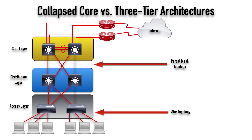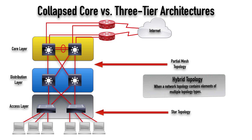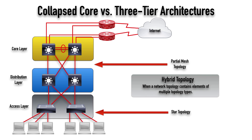This leads us to another term: a hybrid topology. A hybrid topology is a network topology that contains elements of multiple topology types. In this case, we've got an element of a star topology and an element of a partial mesh topology.